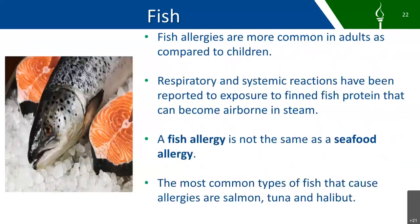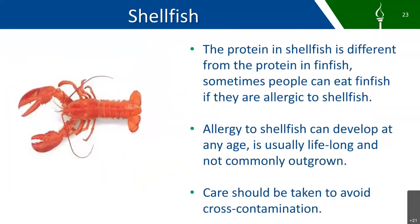Fish allergies are more common in adults compared to children. Respiratory and systemic reactions have been reported from exposure to finned fish protein that can become airborne in steam. A fish allergy is not the same as a seafood allergy. The most common types of fish that cause these allergies are salmon, tuna, and halibut. The shellfish protein is different from the finned fish protein, and sometimes people can eat finned fish if they are allergic to shellfish. Allergy to shellfish can develop at any age and is usually lifelong and not commonly outgrown, so care should be taken to avoid cross-contamination.